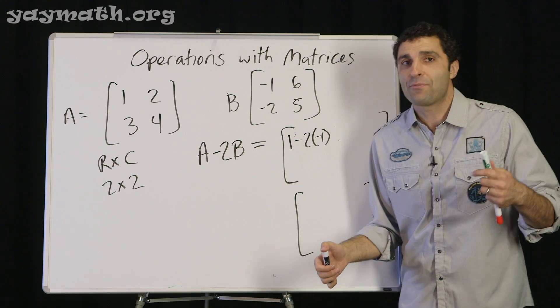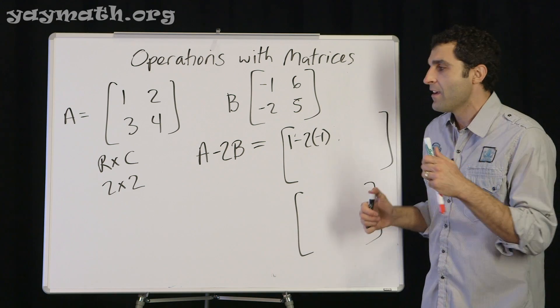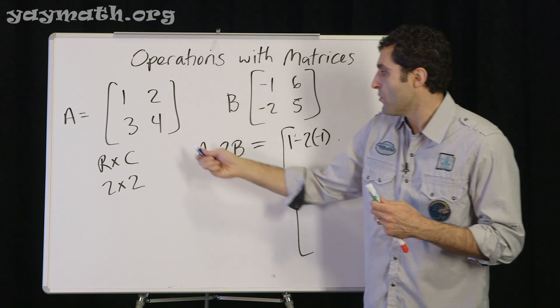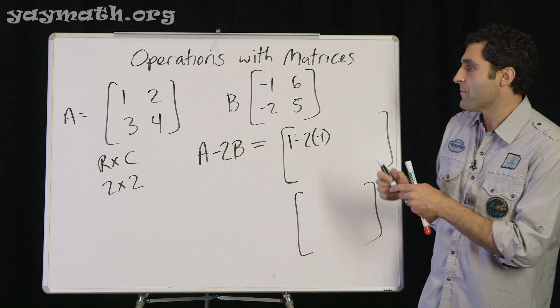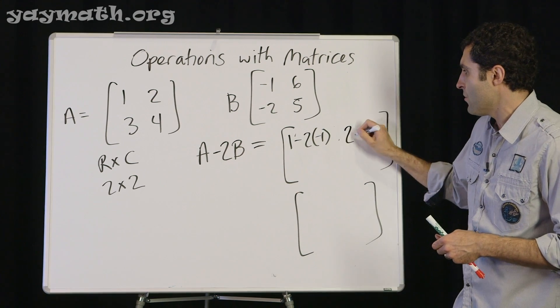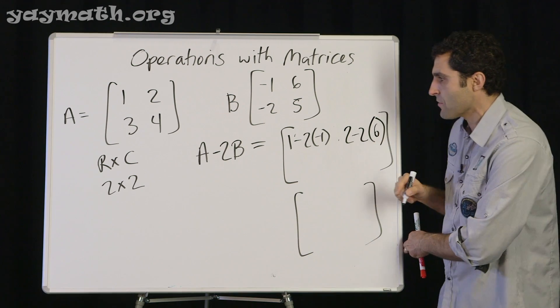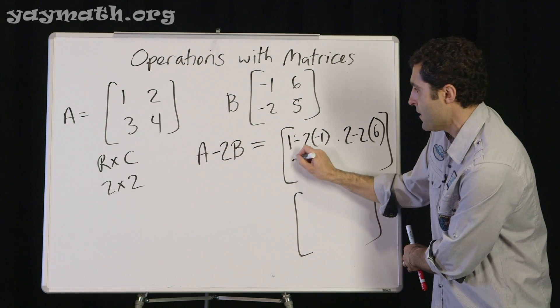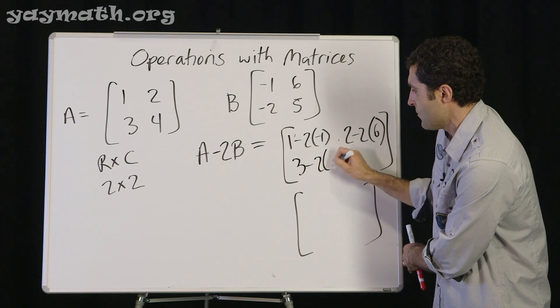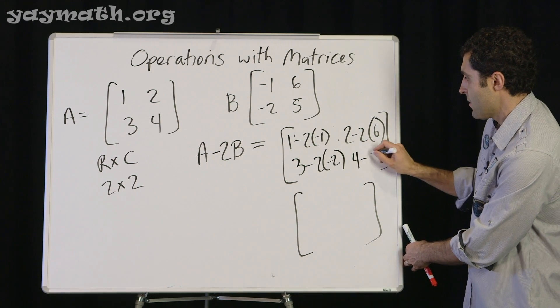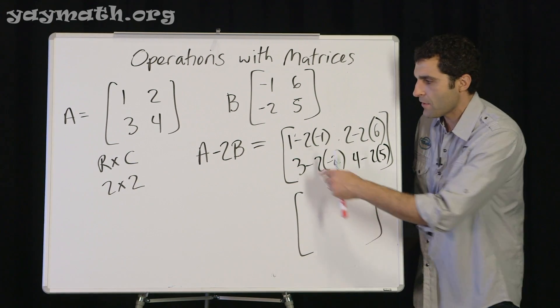And it may happen with me too. So just look out for me. I'll try to do this myself. Let's try this one. Two minus two times six. I'm going to write it out. Two minus two times six. Stay with it. And then this is three minus two times negative two. And this is four minus two times five. Let's rock through it.